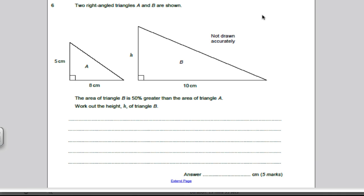A nice simple question really, and it's 5 marks, so this is a lovely question to come up. The area of triangle B is 50% greater than that of A. Work out the height of triangle B. First thing to do, why not work out the area of triangle A to start with? A nice easy one, area of triangle A.